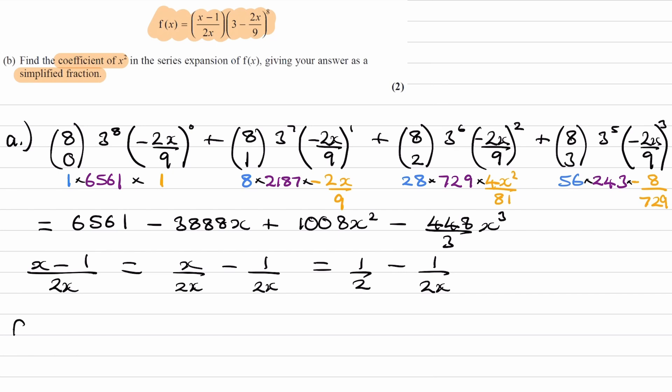So we can then rewrite f(x) as that 1/2 minus 1/(2x), which is again this bit here rewritten, multiplied by the expansion of this, so I'll just write out these first four terms. And I'll just put a little dot, dot, dot at the end, because that does continue on.